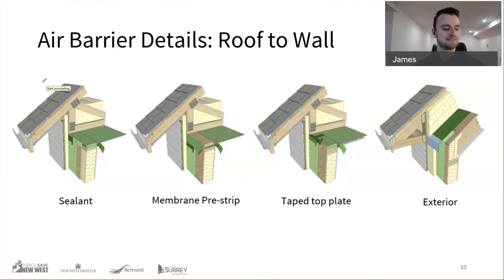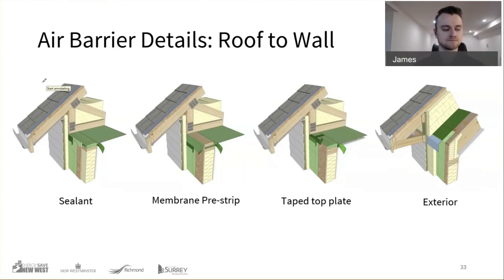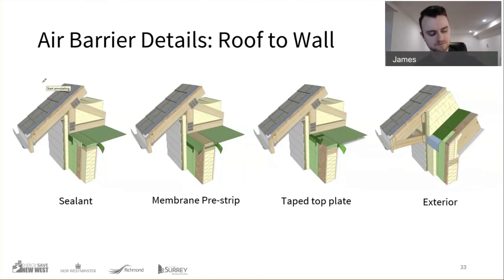A colleague from the City of Richmond adds a comment on mid-construction test scores: the City collects both mid-construction test scores and as-built scores, and this data suggests about a 25% gain after drywall is installed. That means if your final target is 3 ACH, your mid-construction test should not exceed 4 as a rule of thumb.